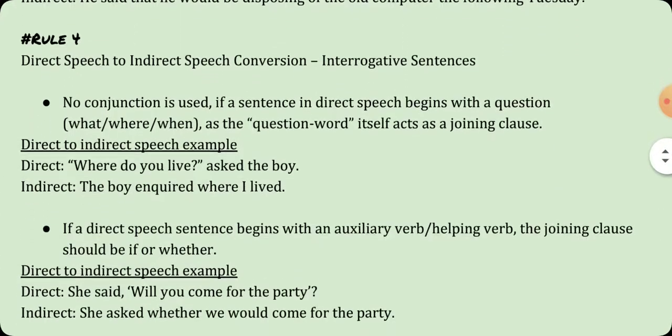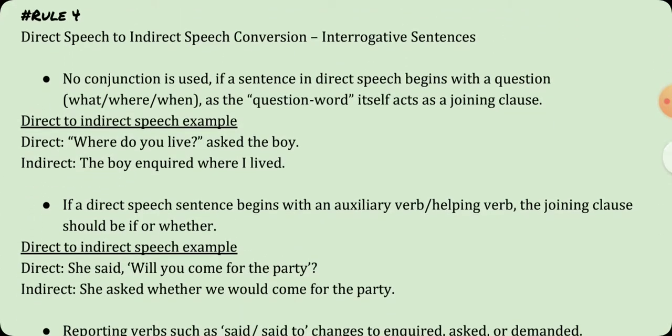The fourth rule is about interrogative sentences. No conjunction is used if a sentence in direct speech begins with a question word such as what, where, or when, as the question word itself acts as a joining clause. For example, 'Where do you live? asked the boy' in indirect speech becomes 'the boy inquired where I lived.' Here, the question word 'where' has become the joining clause in indirect speech.